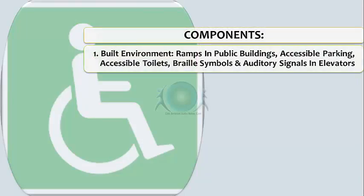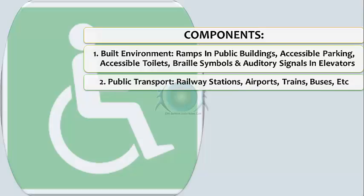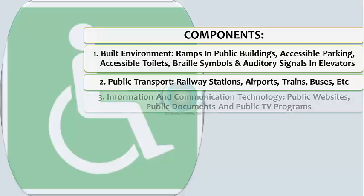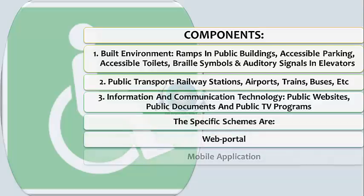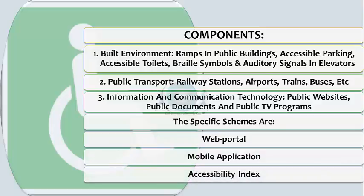A special mention must be made of the Accessible India Campaign. The components of the built environment mandated by law include ramps in public buildings, accessible parking, accessible toilets, braille symbols, and auditory signals in elevators. Public transport at railway stations, airports, trains and buses also has accessible ramps and other necessary features. Information and communication technology is being deployed, including public websites, public documents, public TV programs, web portals, mobile applications, and an accessible index developed for PWDs.